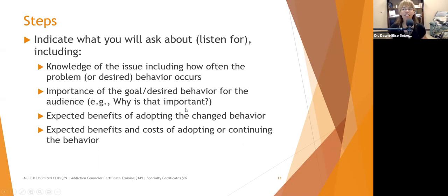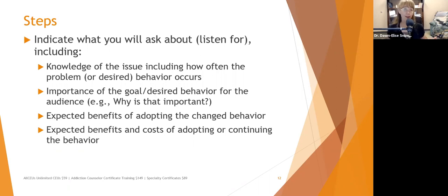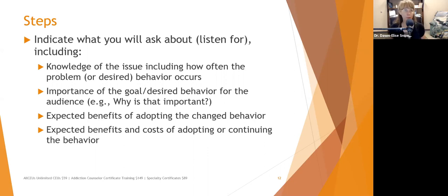Indicate what you're going to ask about, including knowledge of the issue, how often the problem behavior occurs, the importance of the desired behavior for the audience, the expected benefits of adopting the changed behavior, and the expected benefits and costs of continuing the behavior. If we don't intervene and just let things go as they are, what do we expect to see happen in our communities? You can pull out statistics about the current impact of opioids in the community, for example.